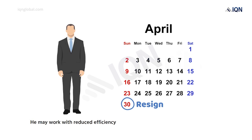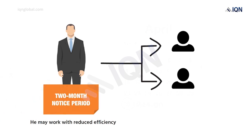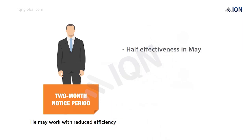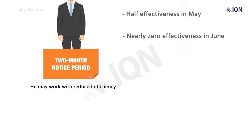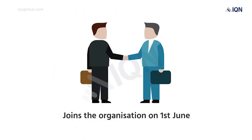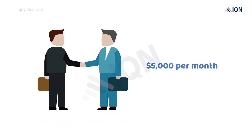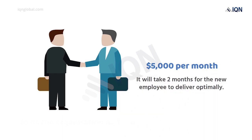The organization immediately distributes some of his work to existing employees. The employee has a two-month notice period. He delivers at half of his effectiveness in May and nearly at zero during June. The organization recruits his replacement, who joins the organization on 1st June. The new recruit is hired at the same salary level of $5,000 per month, but it will take another two months for the new employee to deliver his tasks optimally.